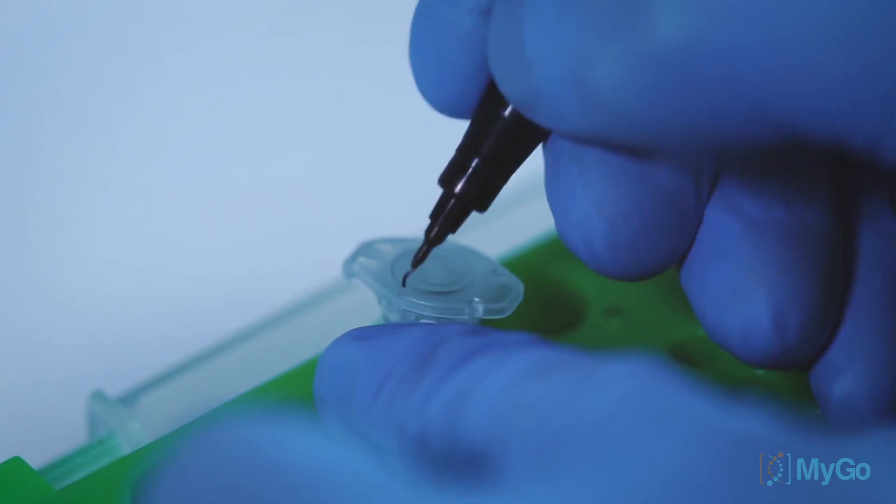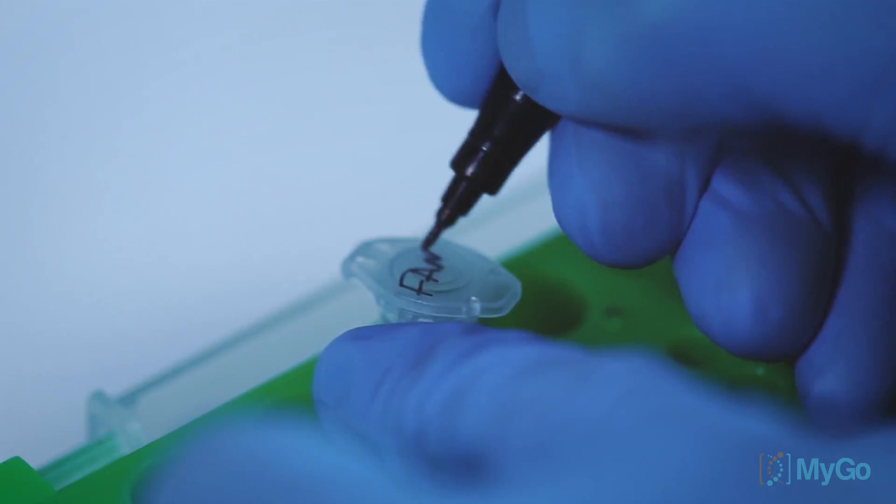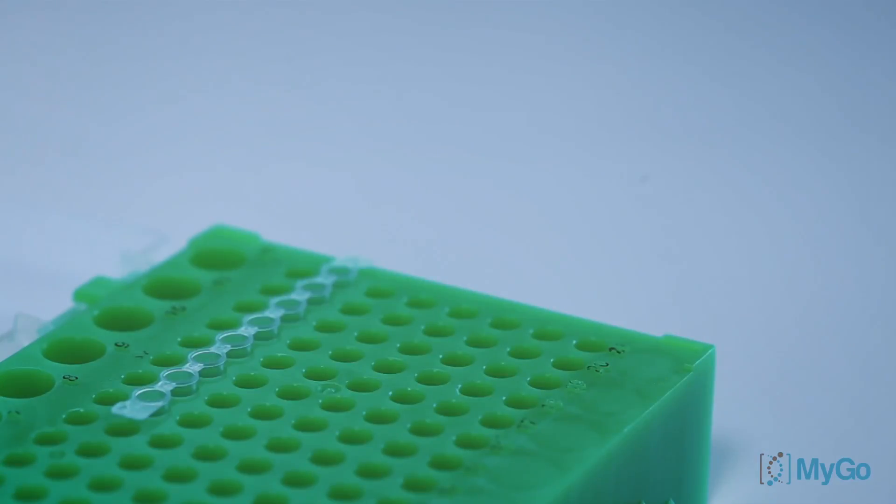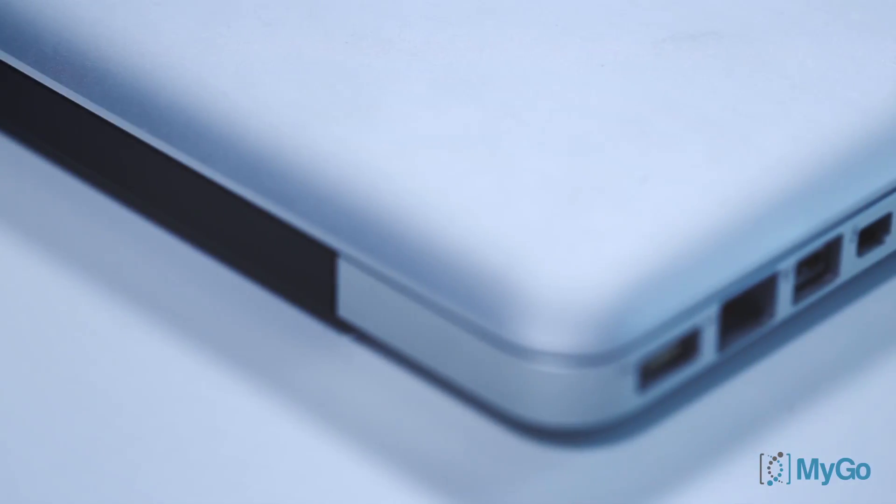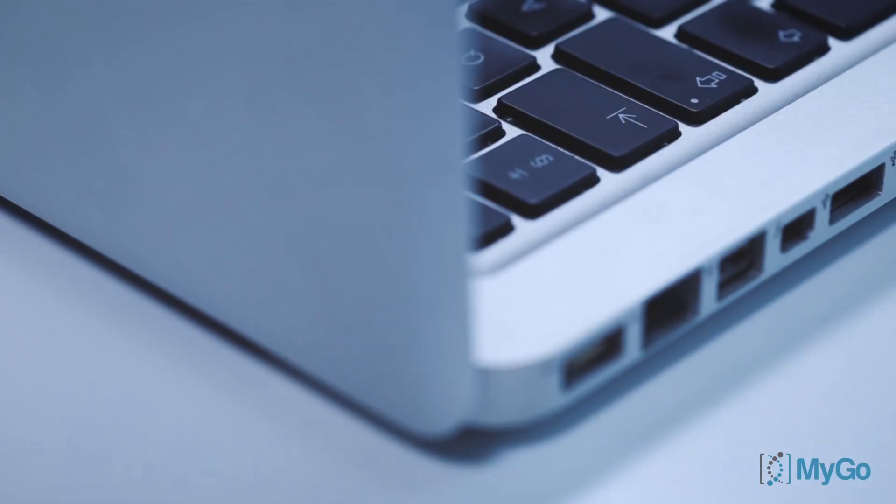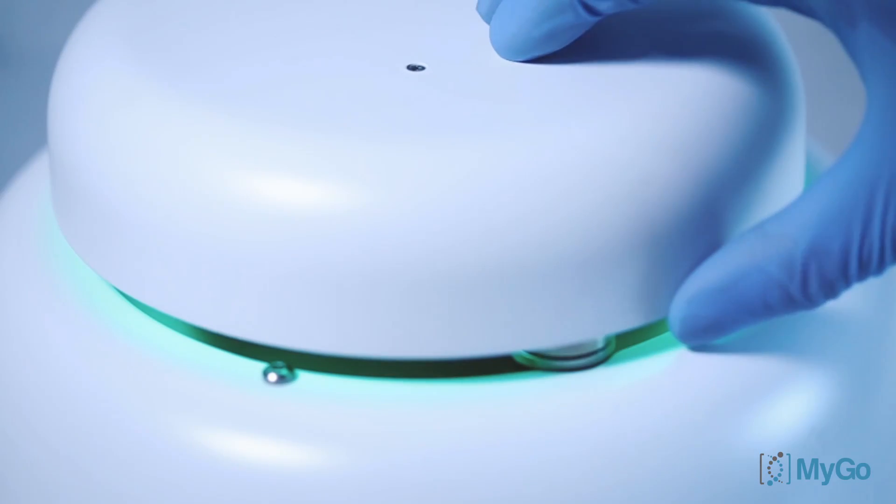You'll also need a pen to label your tubes. You should use MYGO Pro 8-well strips and caps. A vortex will also be useful when mixing, but is not essential. Finally, you'll need a laptop or PC and a MYGO Pro to run your experiment.